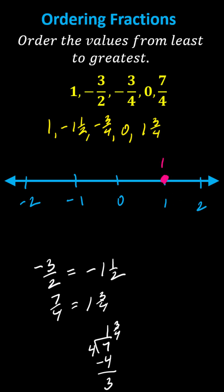Negative 1 and 1 half is right in the middle between negative 1 and negative 2 here. To plot negative 3 fourths, which is between 0 and negative 1, we'll break the interval from 0 to negative 1 into 4 equal parts, so we can count by fourths, starting at 0 and moving back.